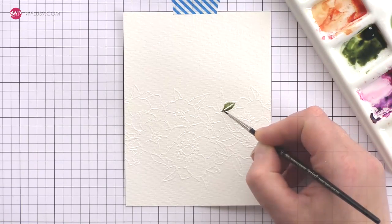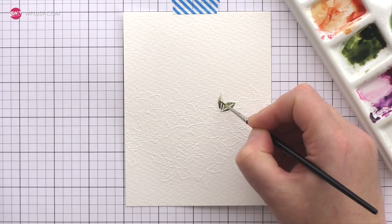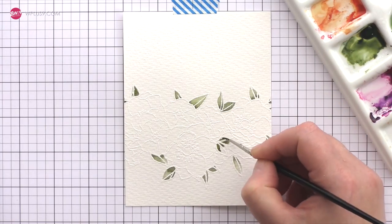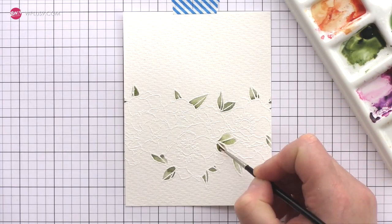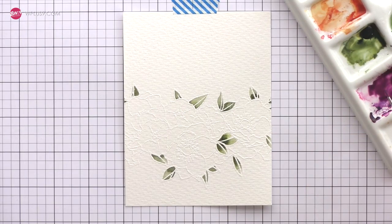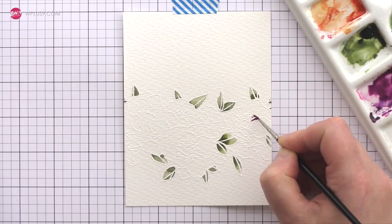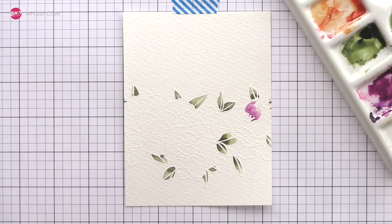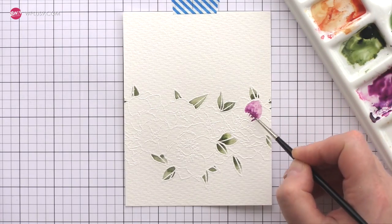However, with the embossed lines creating barriers between each area I can freely paint in any order which suits. As I'm painting I'm experimenting with two techniques. Firstly I apply paint directly to the card and then draw the color over the rest of the area I was painting with a damp paintbrush. This creates deep shadows in areas of lighter color.